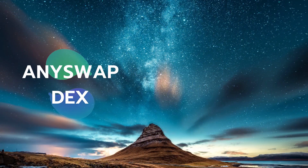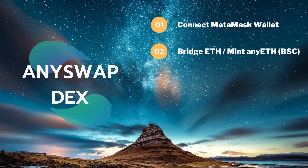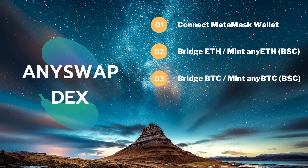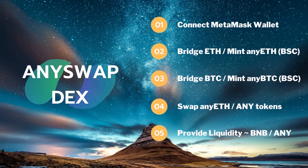Before we kick it off, I'm just going to run through the steps we're going to take in this demo tutorial of the AnySwap cross-chain DEX, powered by Fusion DCRM and running on Binance Smart Chain. First, we're going to connect our BSC wallet via MetaMask by setting up a custom RPC. Next, we're going to bridge over ETH from the Ethereum blockchain to anyETH running on AnySwap BSC. Thirdly, we're going to bridge BTC from the Bitcoin blockchain to anyBTC running on AnySwap BSC. Following that, we're going to swap some anyETH into ANY tokens, and finally we're going to provide liquidity and pool BNB/ANY pairings to earn those ANY rewards.